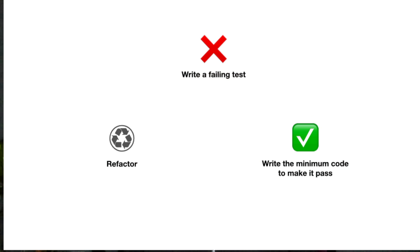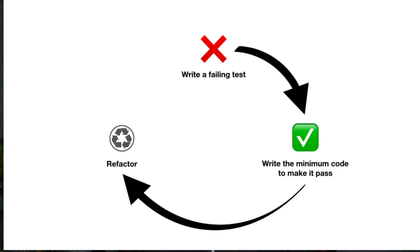TDD, or Test Driven Development, is a software development process which has three phases applied incrementally until you have the whole functionality ready. The first phase is to write a failing test. The second phase is to write the minimum amount of code necessary for that test to pass. The third phase is to refactor the code in case you need to make some improvements.